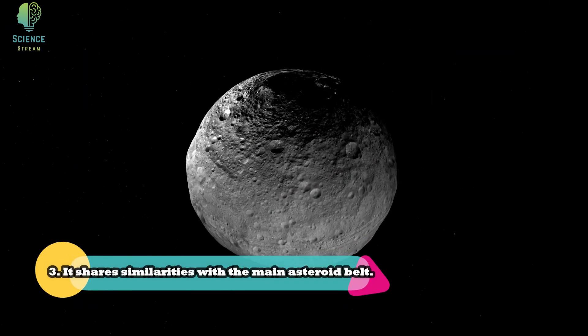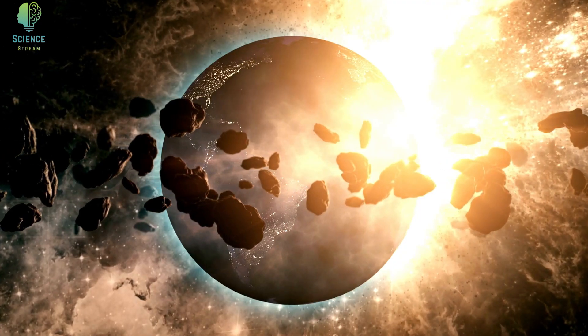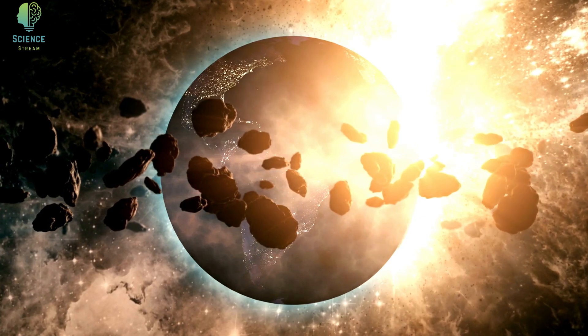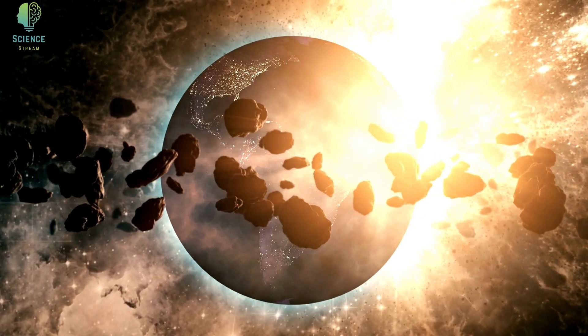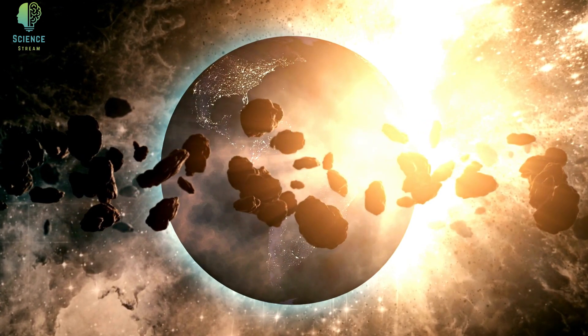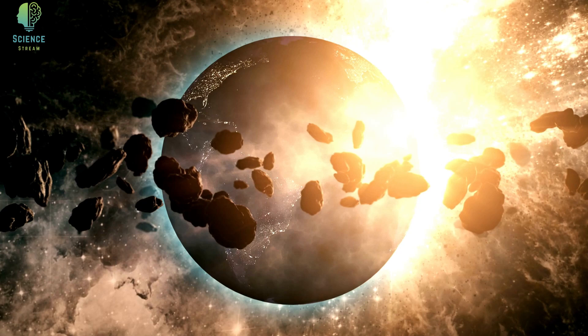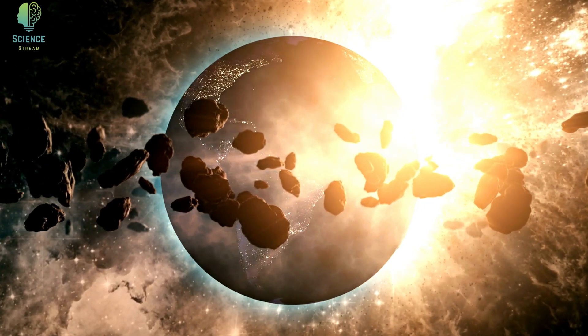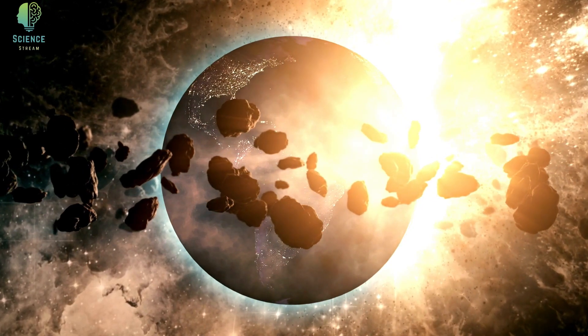Three, It shares similarities with the main asteroid belt. Astronomers think the icy objects of the Kuiper belt are remnants from the formation of the solar system. Similar to the relationship between the main asteroid belt and Jupiter, it's a region of objects that might have come together to form a planet had Neptune not been there. Instead, Neptune's gravity stirred up this region of space so much that the small, icy objects there weren't able to coalesce into a large planet.